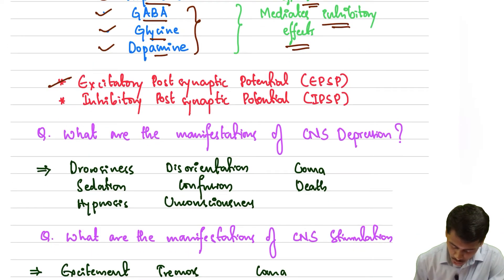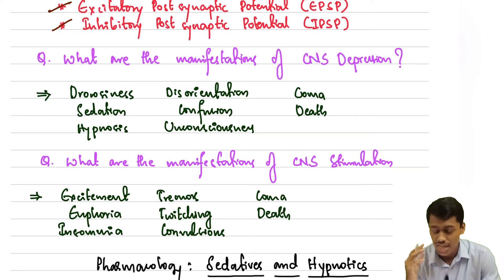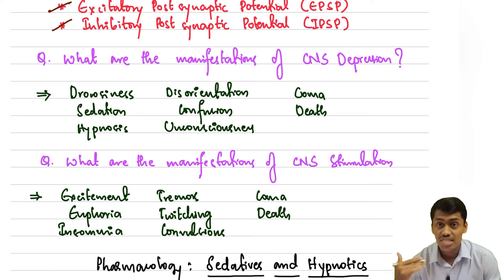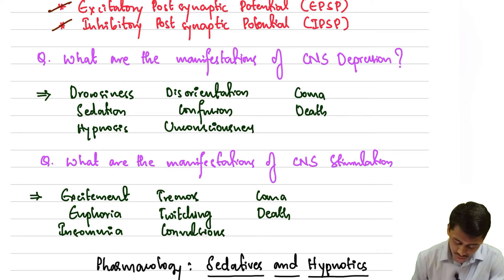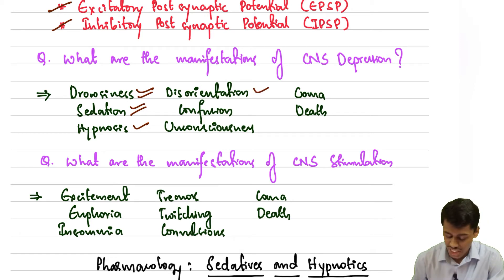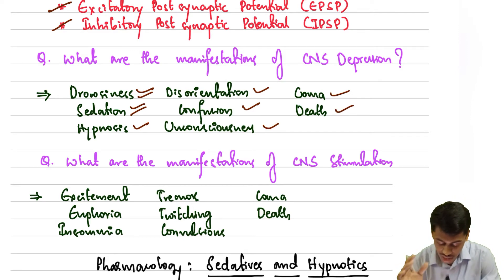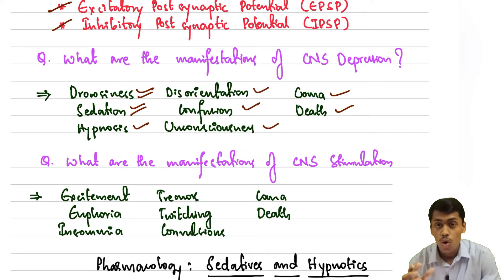What are the manifestations of CNS depression? When inhibition is activated, we can see: the person feels drowsy, the person is sedated or feeling sleepy, the person might undergo hypnosis, the person might also feel disorientation, confusion, unconsciousness, finally coma, and death. So these are all the manifestations of CNS depression: drowsiness, sedation, hypnosis, disorientation, confusion, unconsciousness, coma, and death.